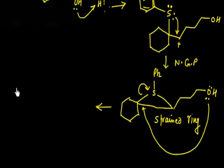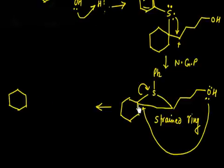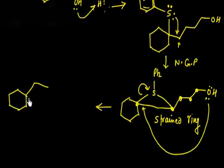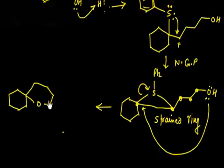After this step, you will have a cyclohexane ring, and the oxygen is connected to the carbon, forming a 6-membered ring containing oxygen — counting 1, 2, 3, 4, 5, and the oxygen makes 6. So you have a 6-membered oxygen-containing ring.